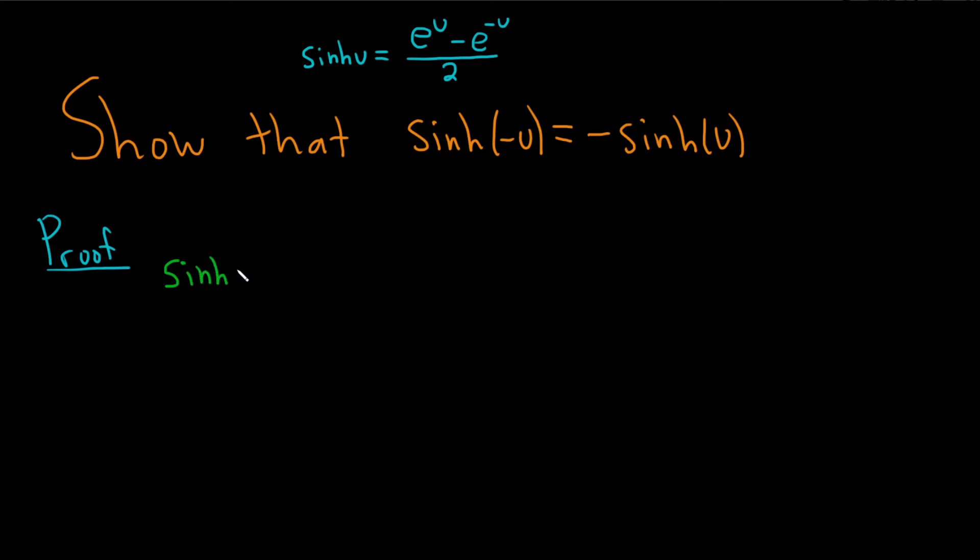So sinh of negative u is equal to... now we're going to use this definition. So it'll be e to the negative u minus, and then we're going to put a negative u here where this negative is. So it'll become e, I'll show the step, it'll be negative negative u just to show that extra step. So this is equal to e to the negative u minus e to the u.